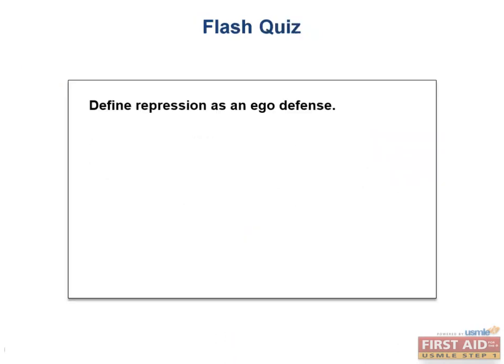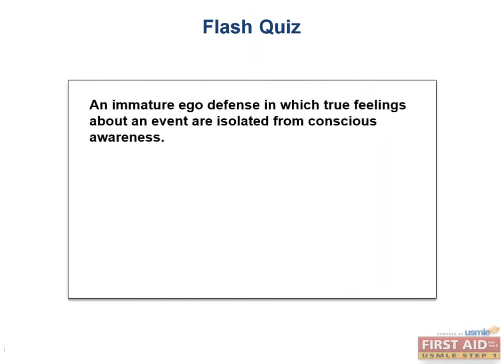Flash quiz: Define repression as an ego defense. The answer is an immature ego defense in which true feelings about an event are isolated from conscious awareness. This is classically seen in cases of abuse, where the memories are so traumatic that the person unconsciously forgets that they happened. Since it's unconscious, we know that it is an immature ego defense.